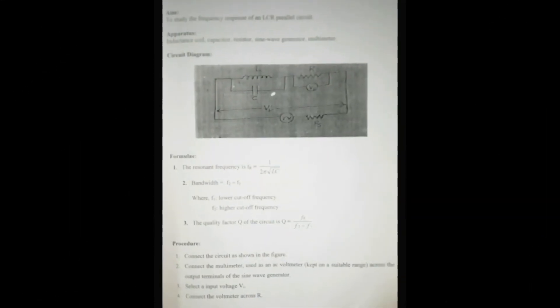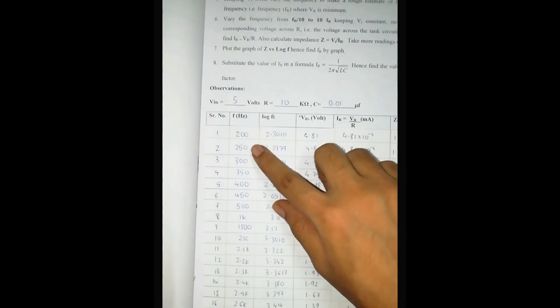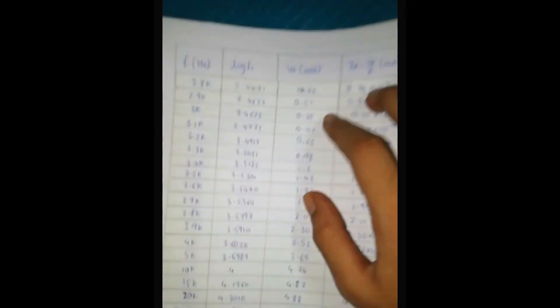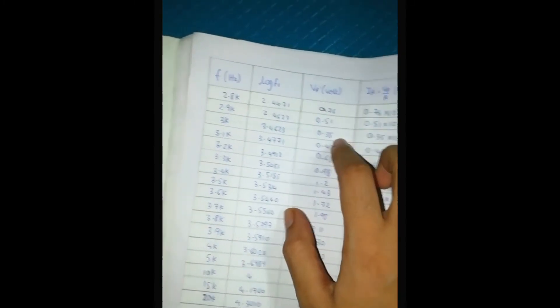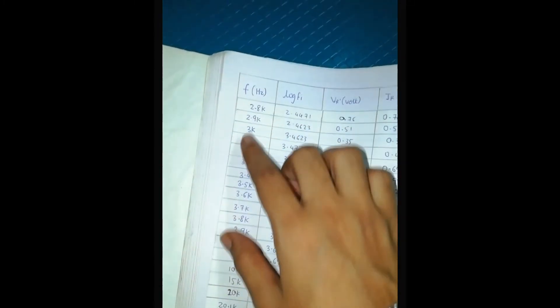Here is the LCR parallel resonance circuit experiment. Looking at the readings — as frequency is increased, the voltage value initially drops, and then after a suitable increase in frequency the voltage rises again. The initial voltage was around 4.89, and at this point also around 4.8, while at 3 kHz we got the minimum voltage value of 0.35.